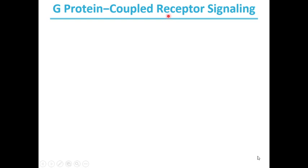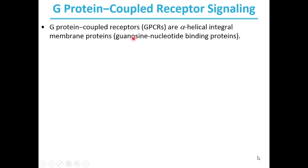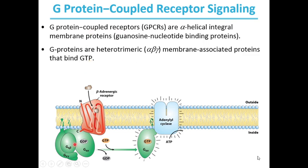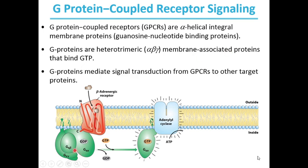Let us discuss G protein coupled receptor signaling. GPCRs are alpha-helical integral membrane proteins, also called guanosine nucleotide binding proteins, because GPCRs interact with guanosine nucleotide binding proteins. G proteins are heteromeric alpha-beta-gamma membrane-associated proteins that bind guanosine triphosphate. G proteins mediate signal transduction from GPCR proteins to other target proteins, for example adenylyl cyclase.